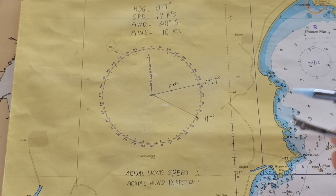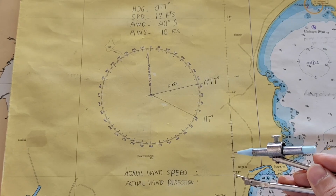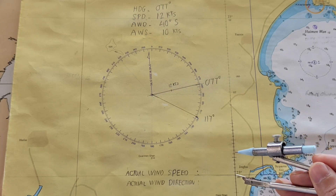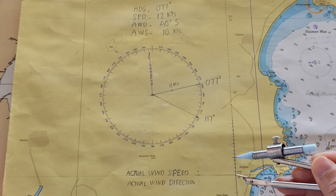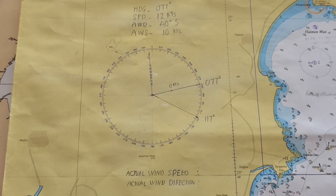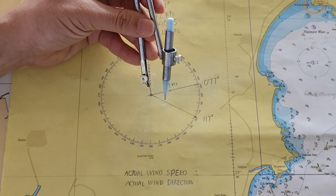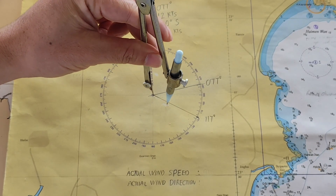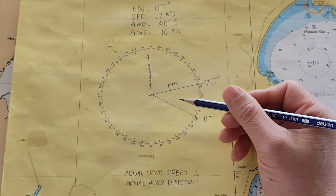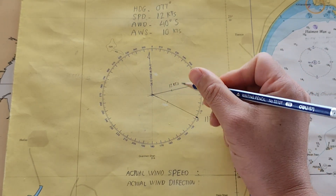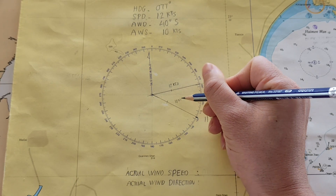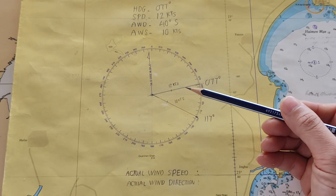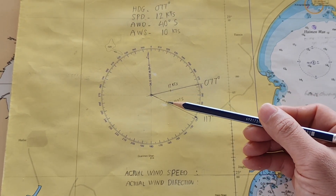This is the apparent wind direction at 117 degrees. For apparent wind speed of 10 knots, I will use the compass to measure that on the latitude dividing scale: two, four, six, eight, ten — 10 knots. Then I'll mark that on the apparent wind direction line.